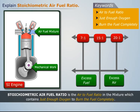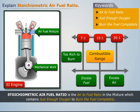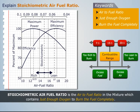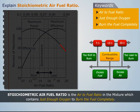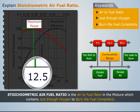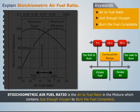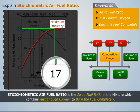Usually for an SI engine, the stoichiometric ratio is taken around 15 to 1, and the limits of combustible mixture are set between 7 to 1 and 20 to 1. Beyond these limits, the air fuel mixture is considered too rich or too lean to burn. For full throttle and constant speed conditions, the power versus air fuel ratio graph shows that maximum power is attained at an air fuel ratio of 12.5 to 1, and maximum efficiency is attained at an air fuel ratio of 17 to 1.